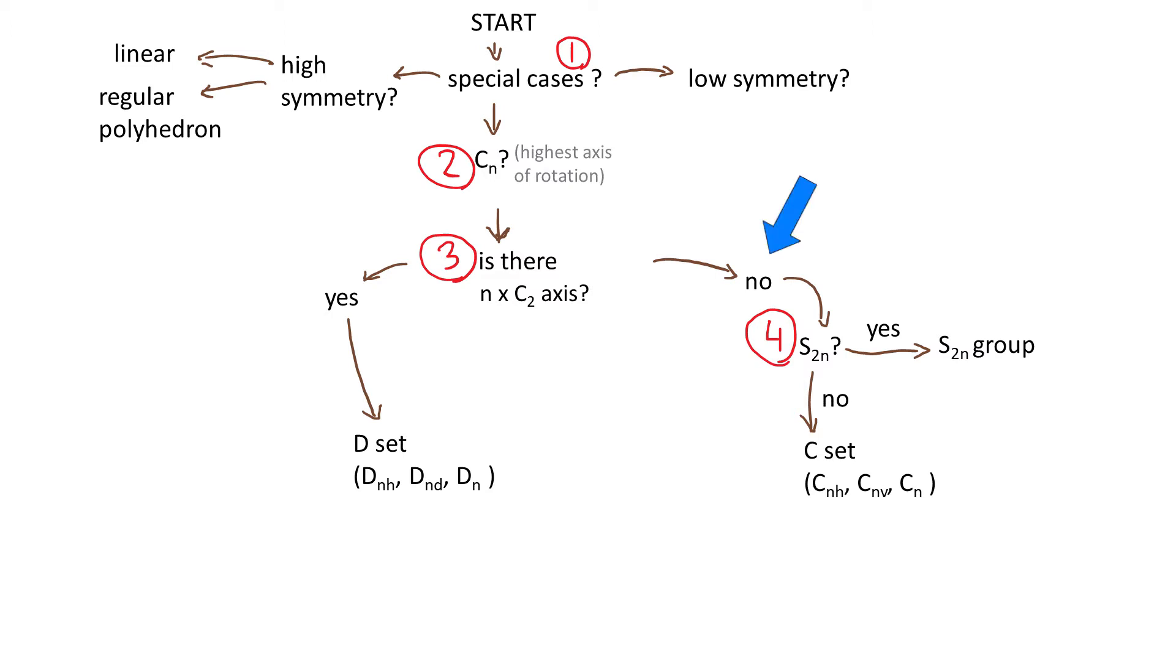Now if the answer to question three is negative then we ask question four: Is there S2N? So let's say the principal axis is C2, is there S4? That way you need to be a little bit careful because DND also has S2N symmetry operations. So you cannot just ask question two about the principal axis and then jump to question four. Later in the video I will give you a specific example for that. To be fair there are only a few molecules that have S2N symmetry but still be careful. If the answer to question four is positive then the point group for our particular molecule is S2N, and if the answer is negative then we end up in C set.